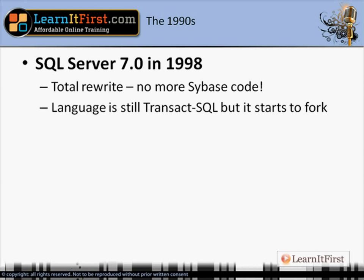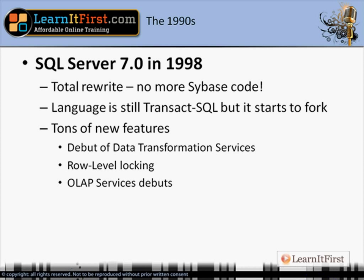The language is still Transact-SQL. Transact-SQL was the language of Sybase and the original SQL Server — there was Transact-SQL for Sybase and Transact-SQL for Microsoft SQL Server. When they split in 1994, neither of them changed that name. So today it's still Transact-SQL for Microsoft and Transact-SQL for Sybase. They are similar, but they're not quite the same — the versions started to fork, meaning there are things in the Sybase version that aren't in the Microsoft version.